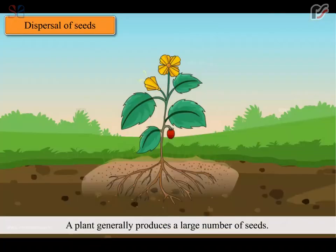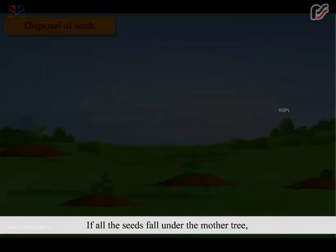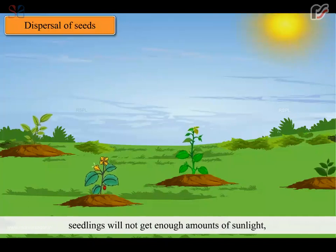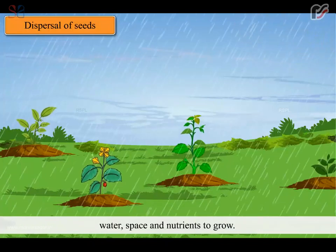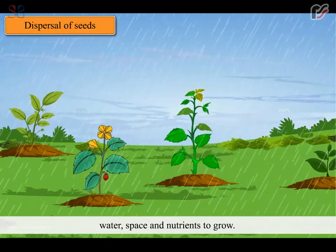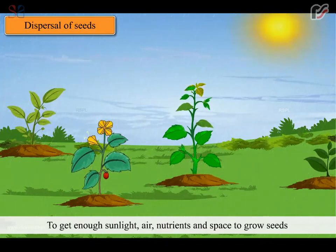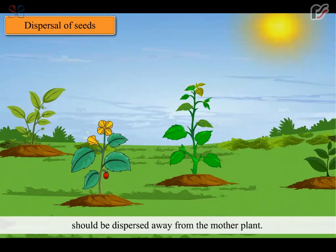A plant generally produces a large number of seeds. If all the seeds fall under the mother tree, seedlings will not get enough amounts of sunlight, water, space and nutrients to grow. To get enough sunlight, air, nutrients and space to grow, seeds should be dispersed away from the mother plant.